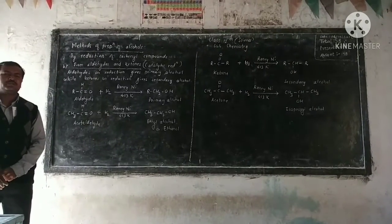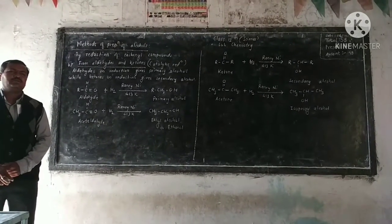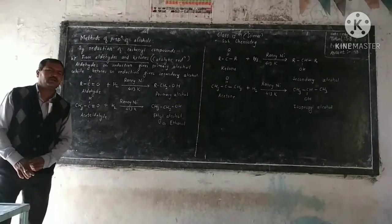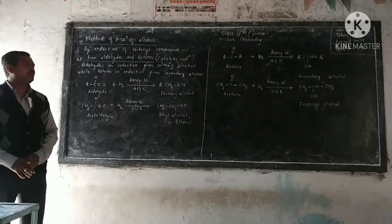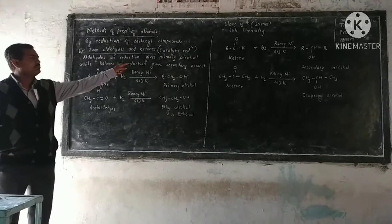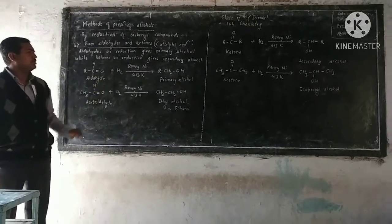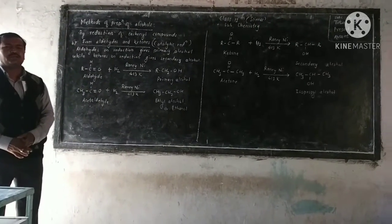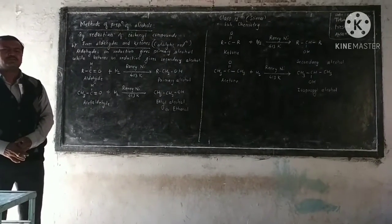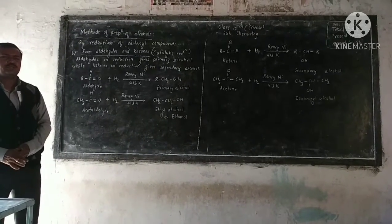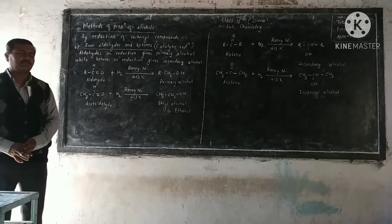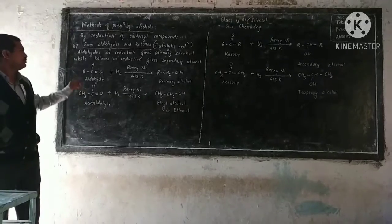Another method of preparation of alcohol is reduction — catalytic reduction. Here, preparation of alcohol from aldehyde and ketone uses a catalyst like Raney Nickel. Aldehyde on reduction gives primary alcohol, and ketone on reduction gives secondary alcohol, in the presence of Raney Nickel at a temperature of 413 Kelvin.